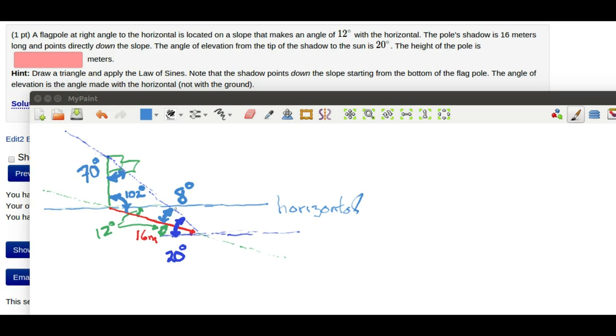So we found out that this angle was 8 degrees because this was 20 and this was 12. We found out that this was 102 because it had to be 90 plus the 12. So this one will have to be 70 because we've got a triangle here and the sum of those angles has to be 180 degrees.